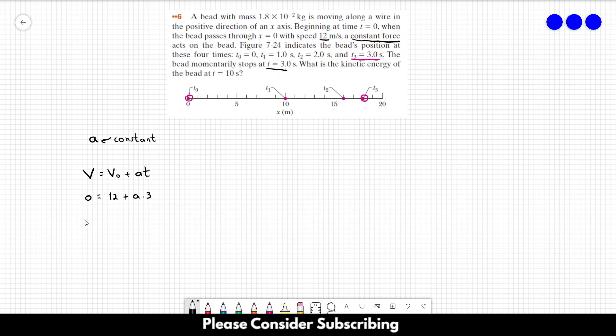So, we can isolate the acceleration. The acceleration equals minus 12 over 3, which gives us minus 4 meters per square second.